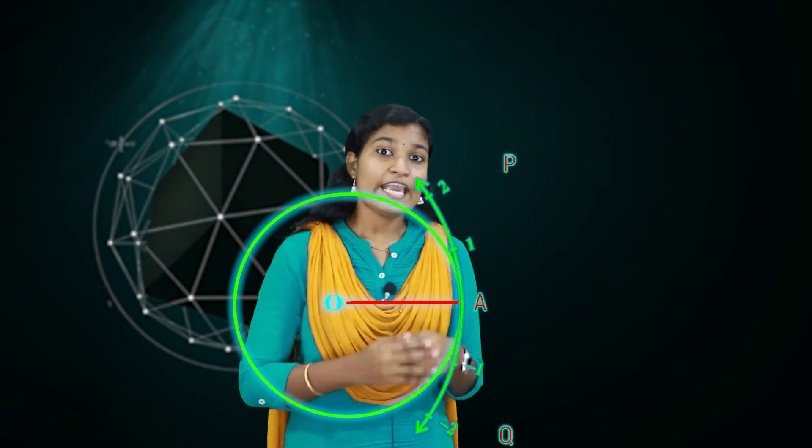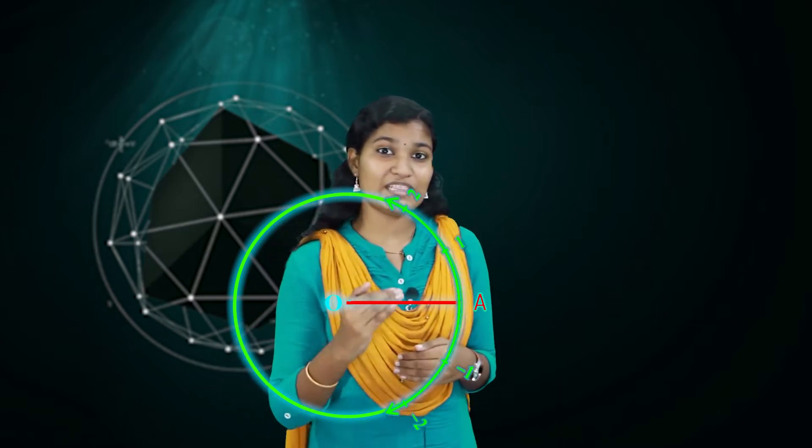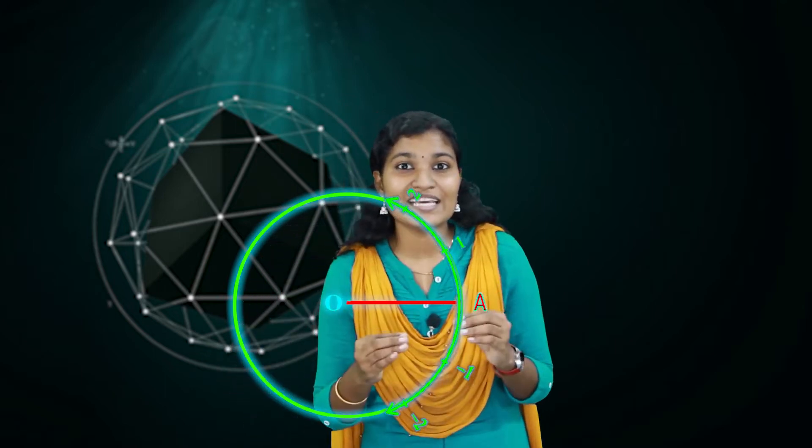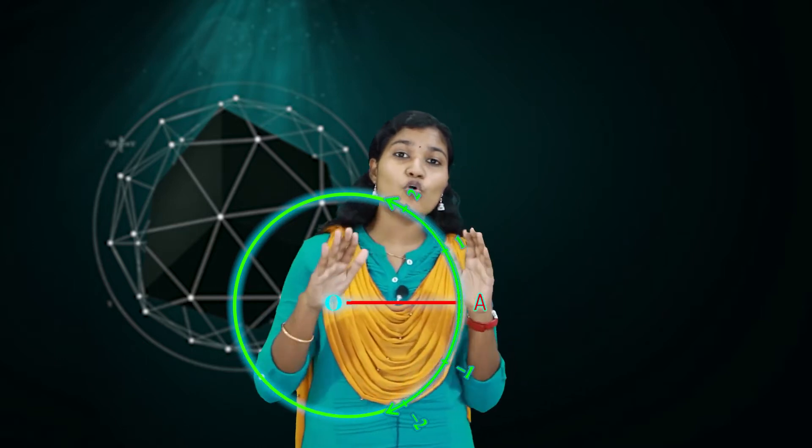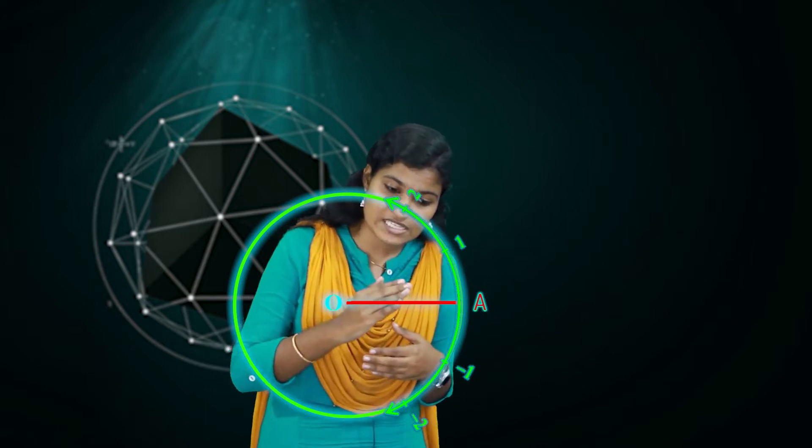I am rotating AP in the anti-clockwise direction and AQ is in the clockwise direction — so AP is anti-clockwise and AQ is clockwise. The number line is rotating and now it touches the circle. The number line, already marked as real numbers, is now touching the circle. For example, the real number 1 is touching the circle.